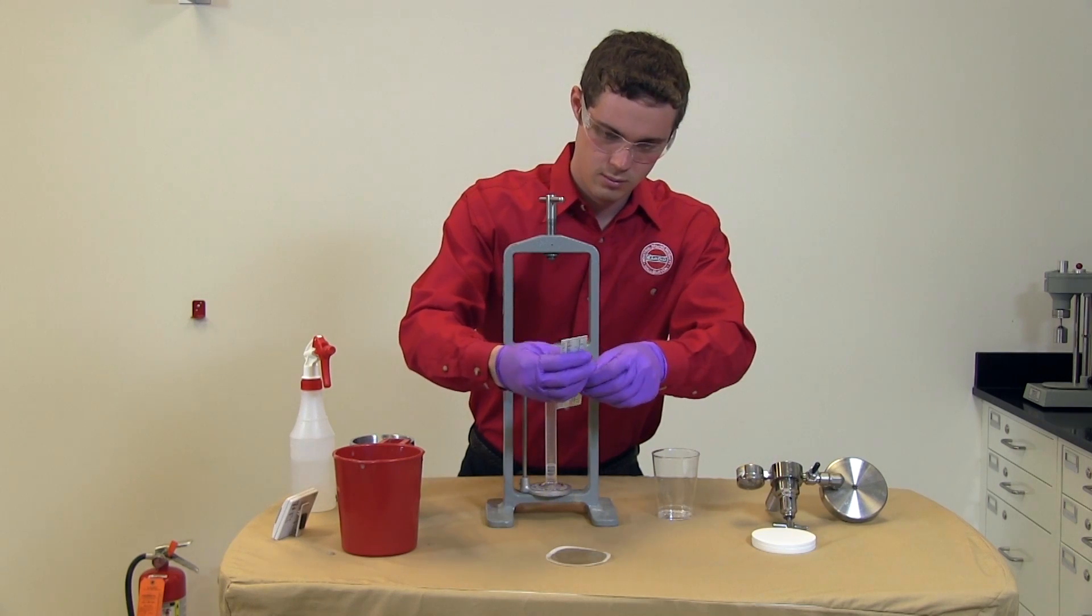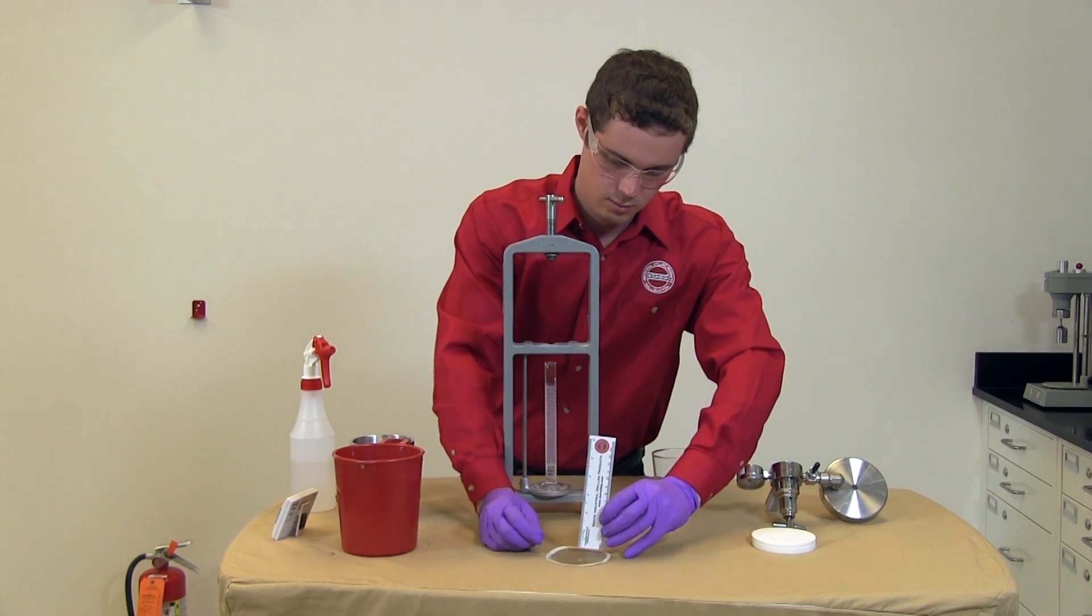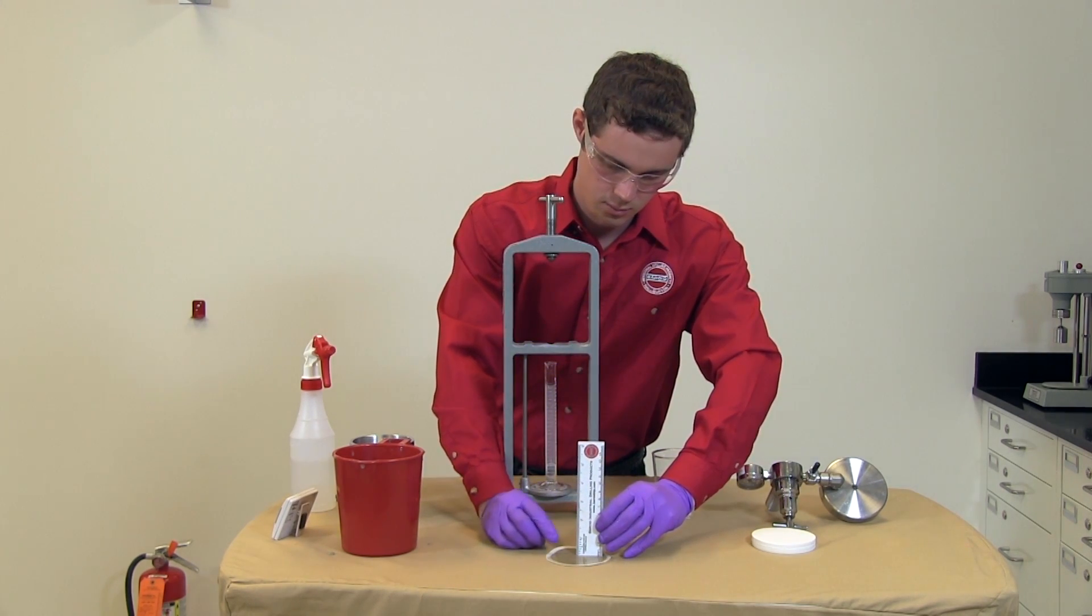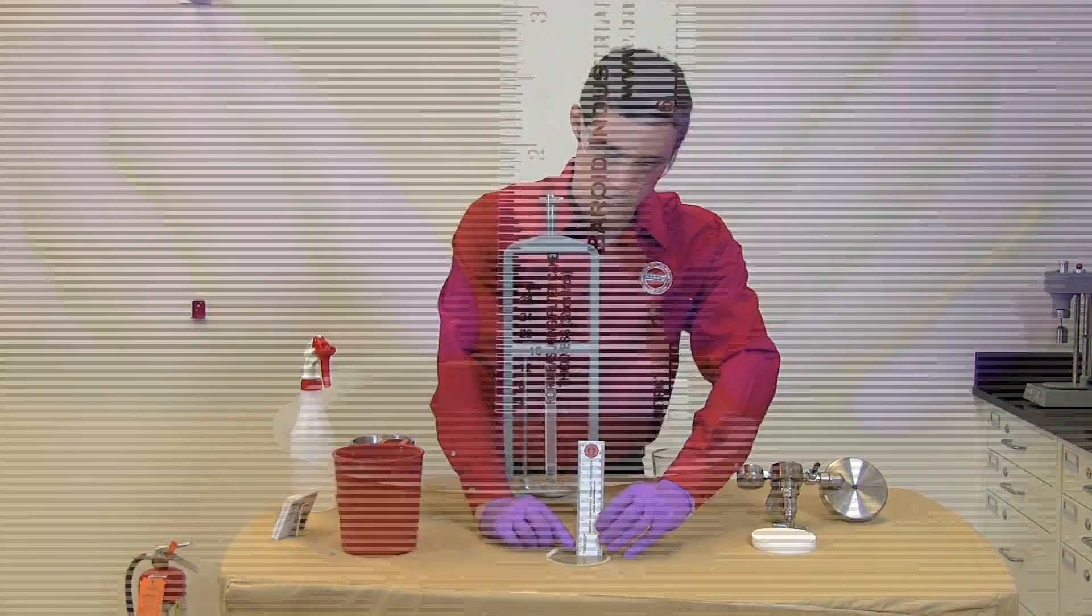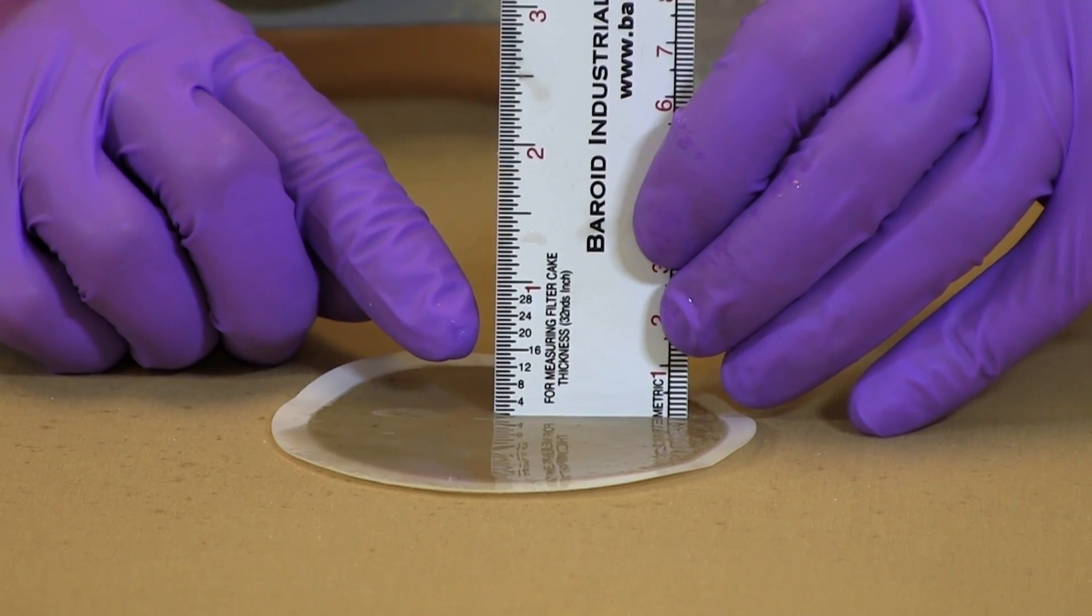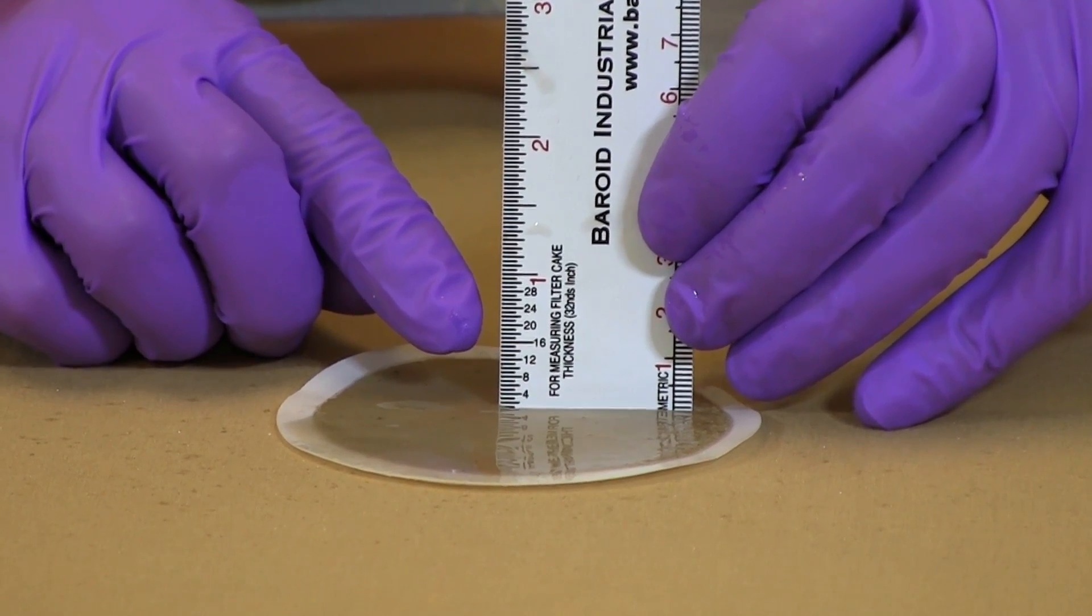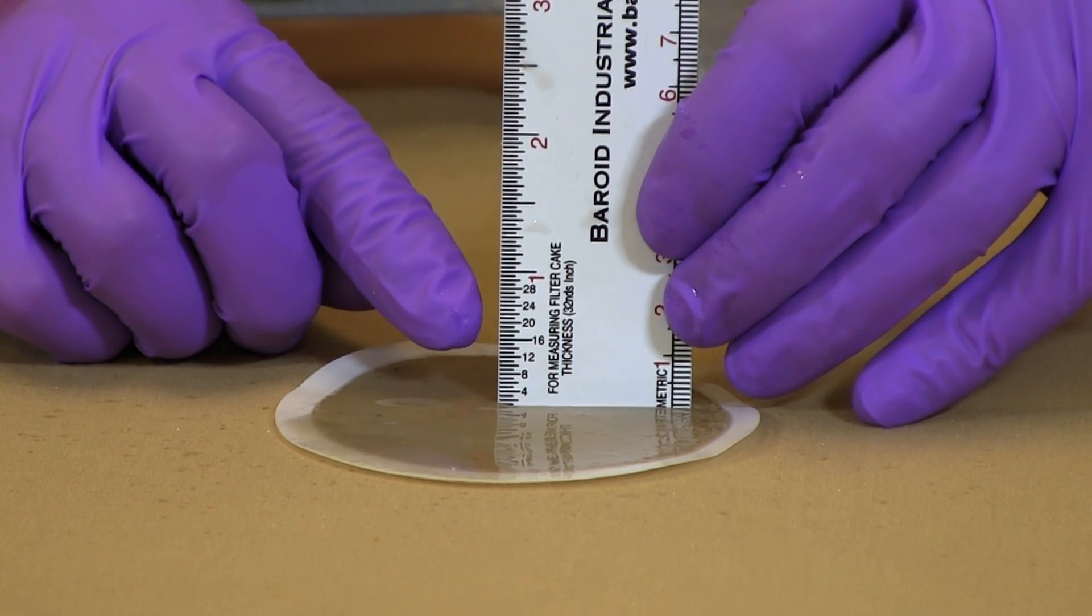Measure the thickness of the filter cake by placing a ruler in the cake and measuring the thickness to the nearest 32nd of an inch or the nearest millimeter. This filter cake is 1/32nd of an inch thick.